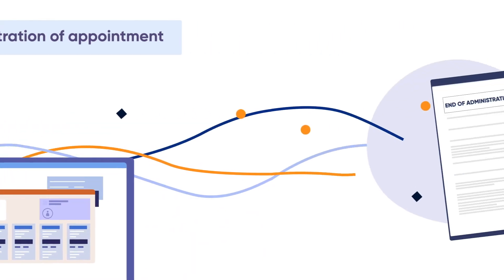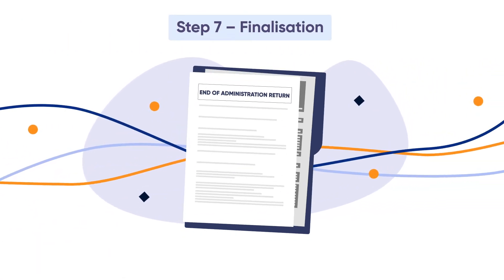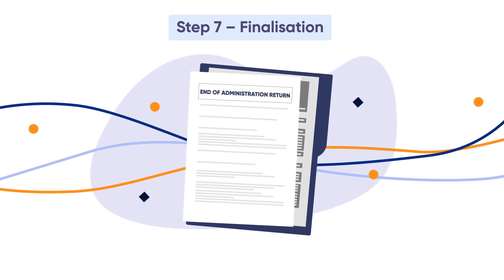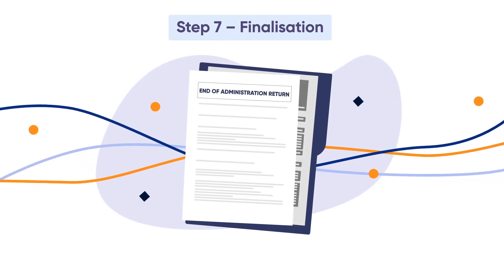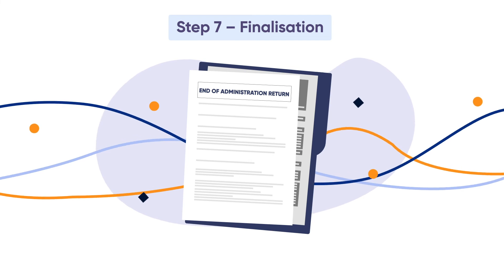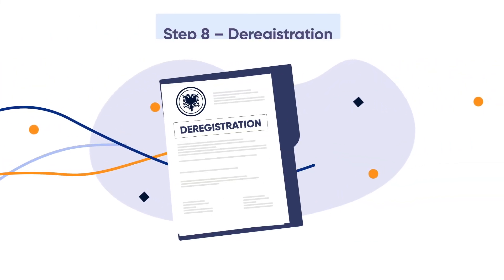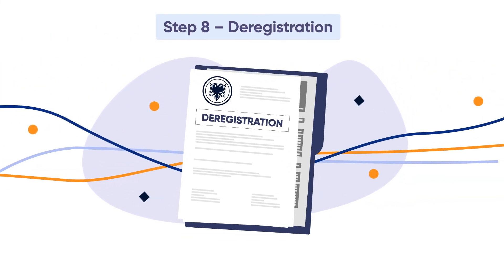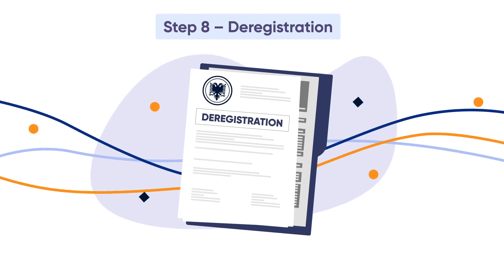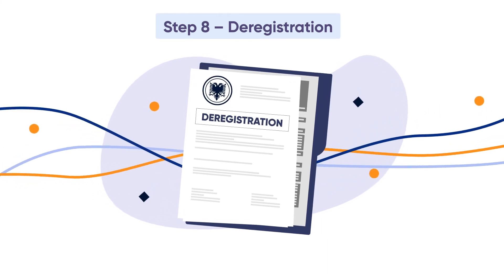Step 7: Finalisation. When the affairs of the company are fully wound up, the liquidator will lodge a final receipts and payments end-of-administration return. Step 8: Deregistration. The company is removed from the ASIC register three months after lodgement of the final receipts and payments by the liquidator.